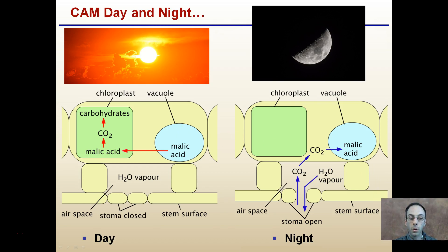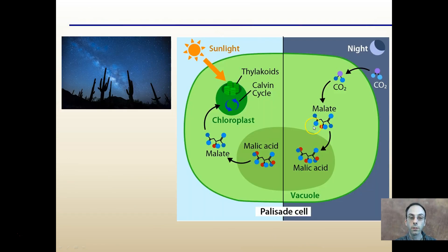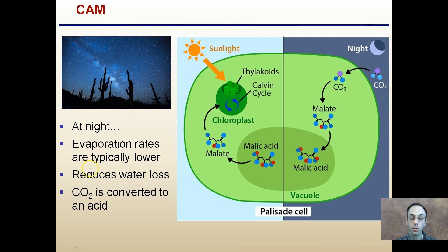There are definite differences between the day and night cycle in CAM plants. During the day, the stomata are closed. At night, the stomata are open, allowing carbon dioxide to come in — though water vapor is also leaving. Because it's at night with lower sunlight intensity, the amount of water lost is definitely reduced. The CO2 is converted to malate acid before being used in the light-dependent reaction.